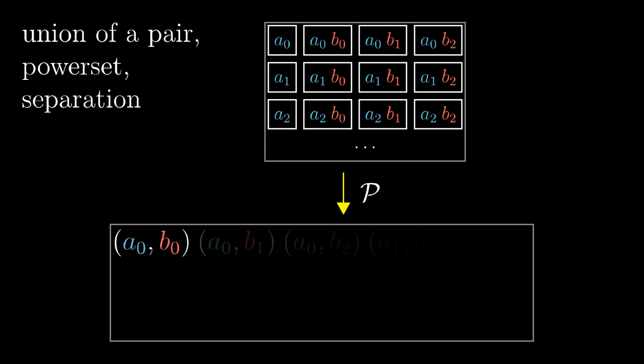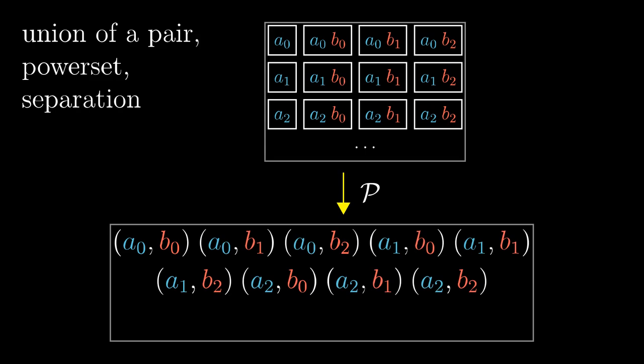Similarly, there will be all the other ordered pairs we need for the Cartesian product and among them plenty of junk around. But we can simply get rid of the junk with the axiom of separation. The rule for separation simply states that we want only the elements which belong to the Cartesian product. So after one union, two power sets, and one separation, we have the Cartesian product.